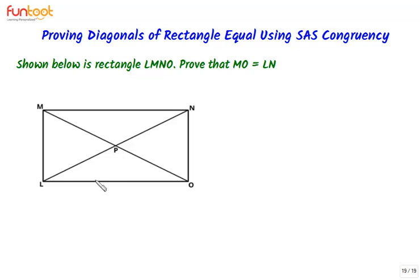Let's see the approach for this proof. Consider the diagonals MO and LN as the sides of two triangles. If we can prove that these triangles are congruent, then by CPCT it will follow that for the two triangles, three pairs of corresponding sides and three pairs of corresponding angles are equal, and hence we can prove that MO is equal to LN.